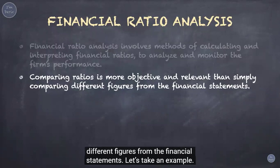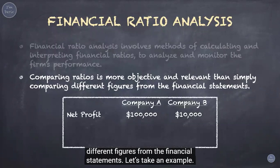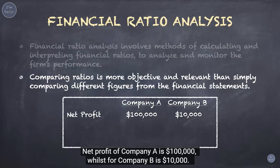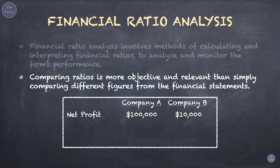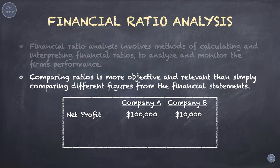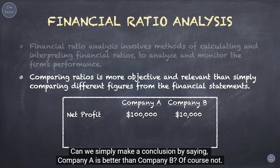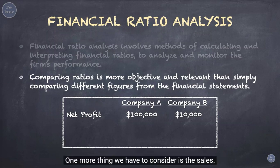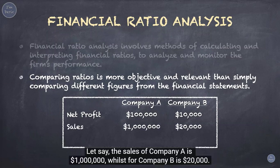Let's take an example. Net profit of company A is $100,000 whilst for company B is $10,000. So company A has made more profit than company B. Can we simply make a conclusion by saying company A is better than company B? Of course not. One more thing we have to consider is the sales. Let's say the sales of company A is $1,000,000 whilst for company B is $20,000.